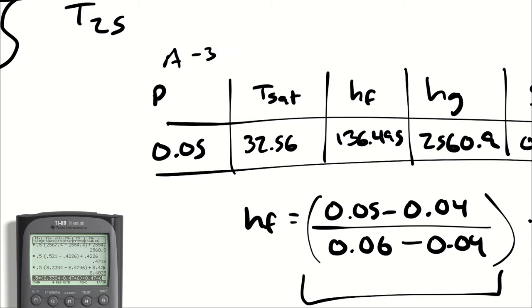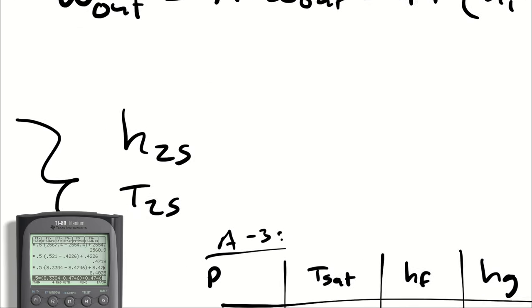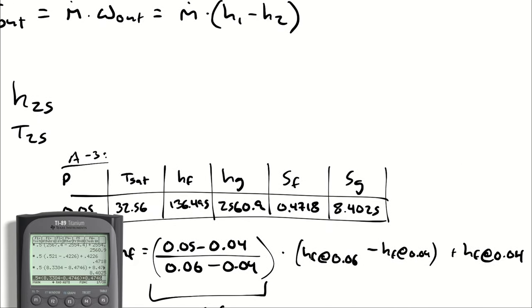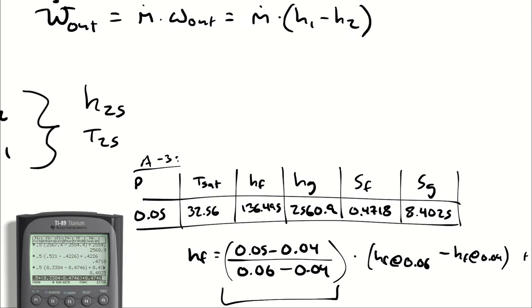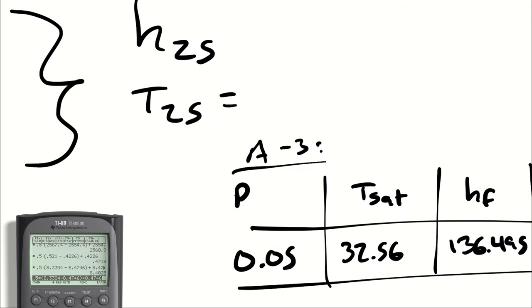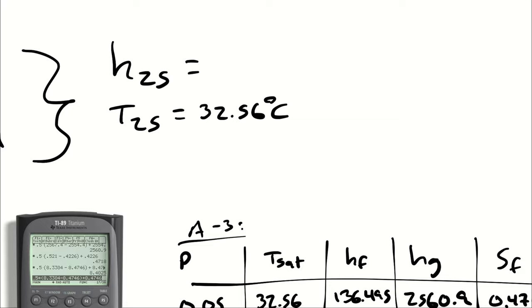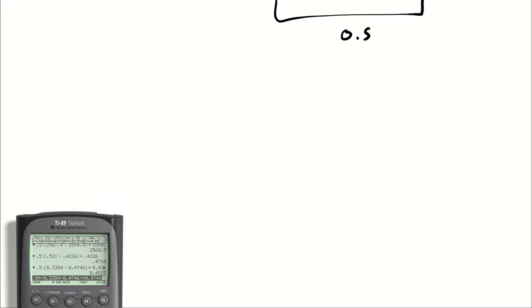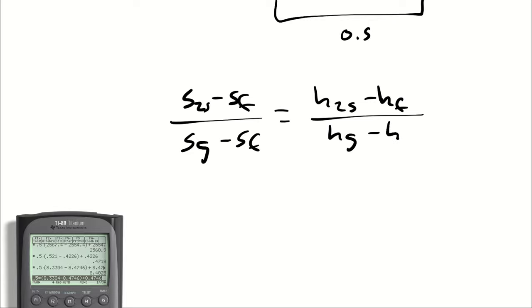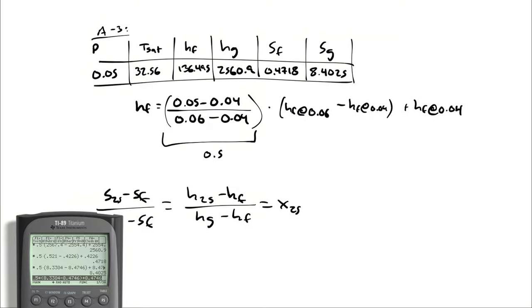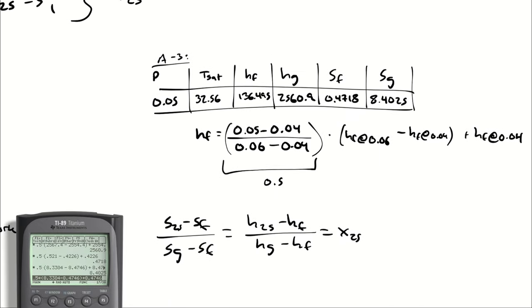And on my shiny new row, I'm going to determine H2S, which is going to be between 136.495 and 2560.9, and T2S, which is known, that is just 32.56. I will scooch my table down. So for H2S I am just interpolating S2S minus SF divided by SG minus SF is equal to H2S minus HF divided by HG minus HF, and that gives me X2S. And you know what, just for fun let's also determine X2S. I mean, when in Rome, right? We already populated this little row of the table, so we might as well.